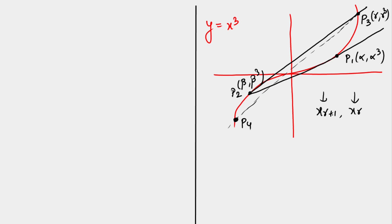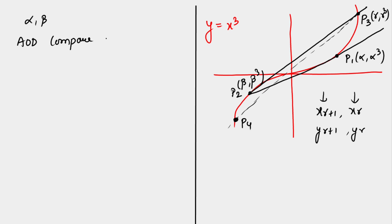Our objective is to find the relationship between the previous X coordinate and the next X coordinate — that is, between X(r) and X(r+1). Similarly, we want the relation between Y(r+1) and Y(r). If we find these recurrence relations, we can solve the limit since the question involves X(r) and Y(r) terms.